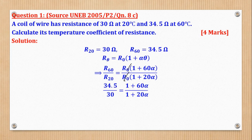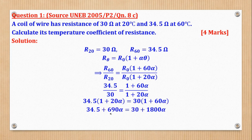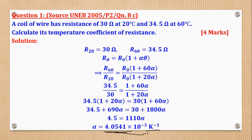After substituting R₆₀ = 34.5 and R₂₀ = 30 and cross-multiplying, opening brackets, collecting like terms, and making alpha the subject, we get the TCR. The unit can be per Kelvin or per degree Celsius — either is acceptable. It is advisable to write your answer for TCR in scientific notation.